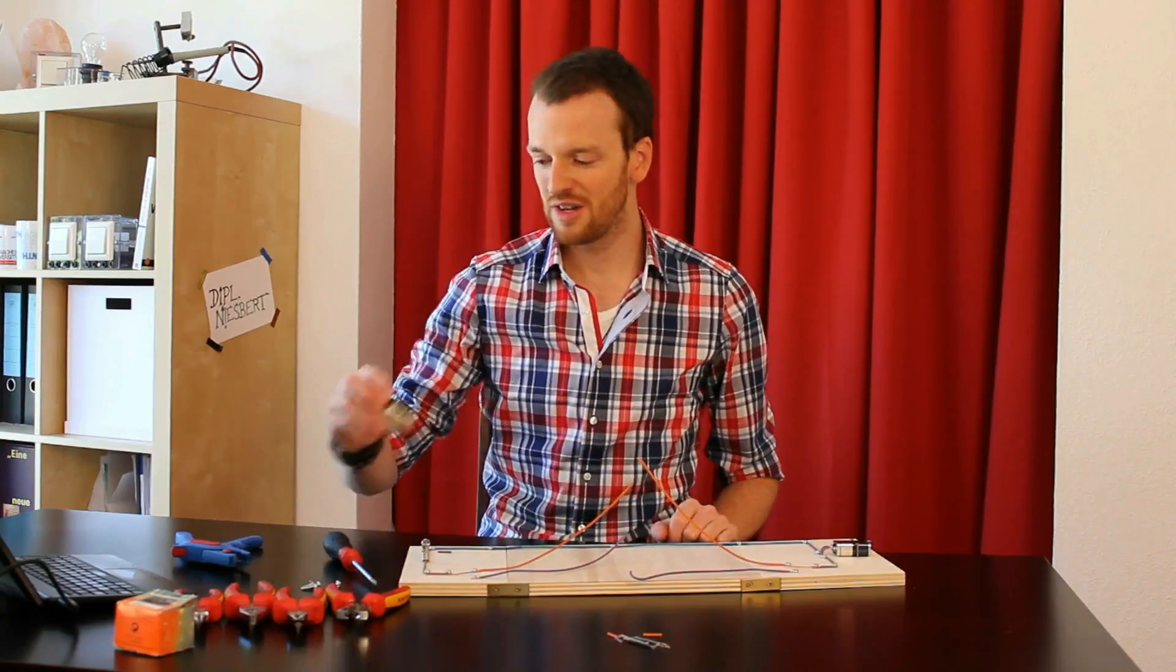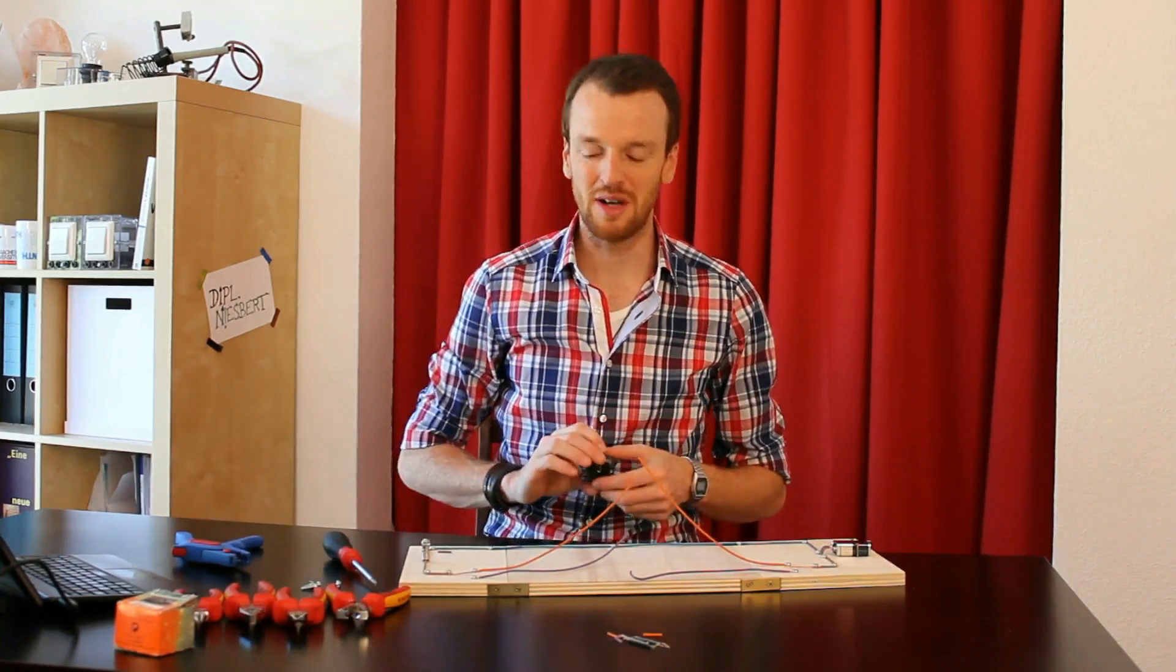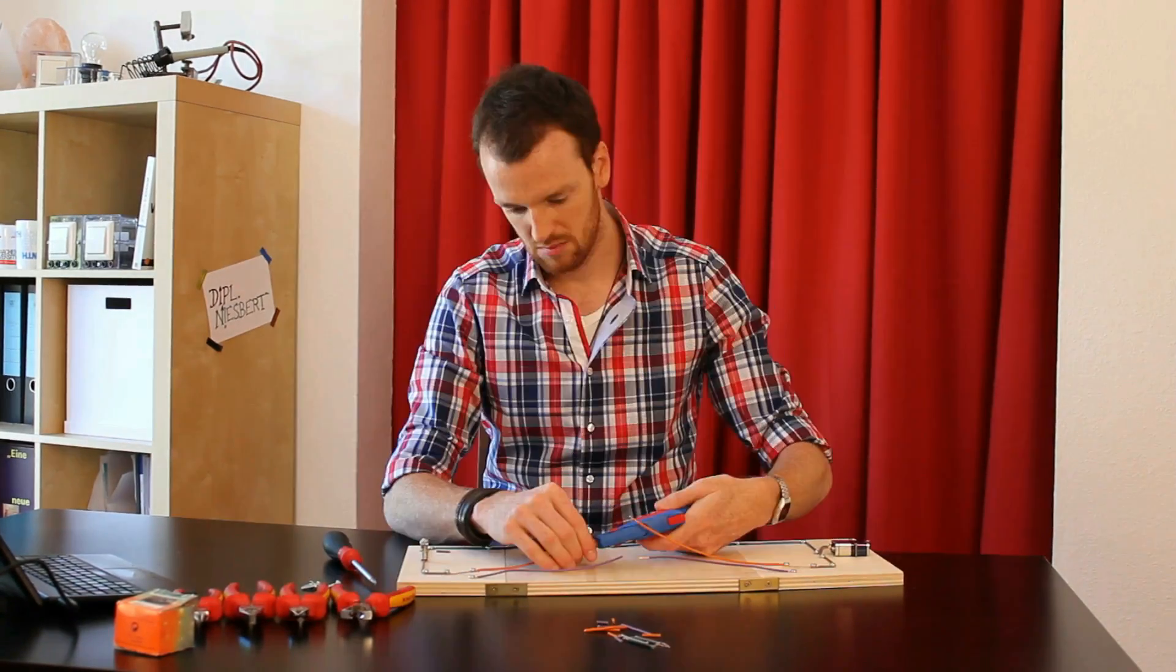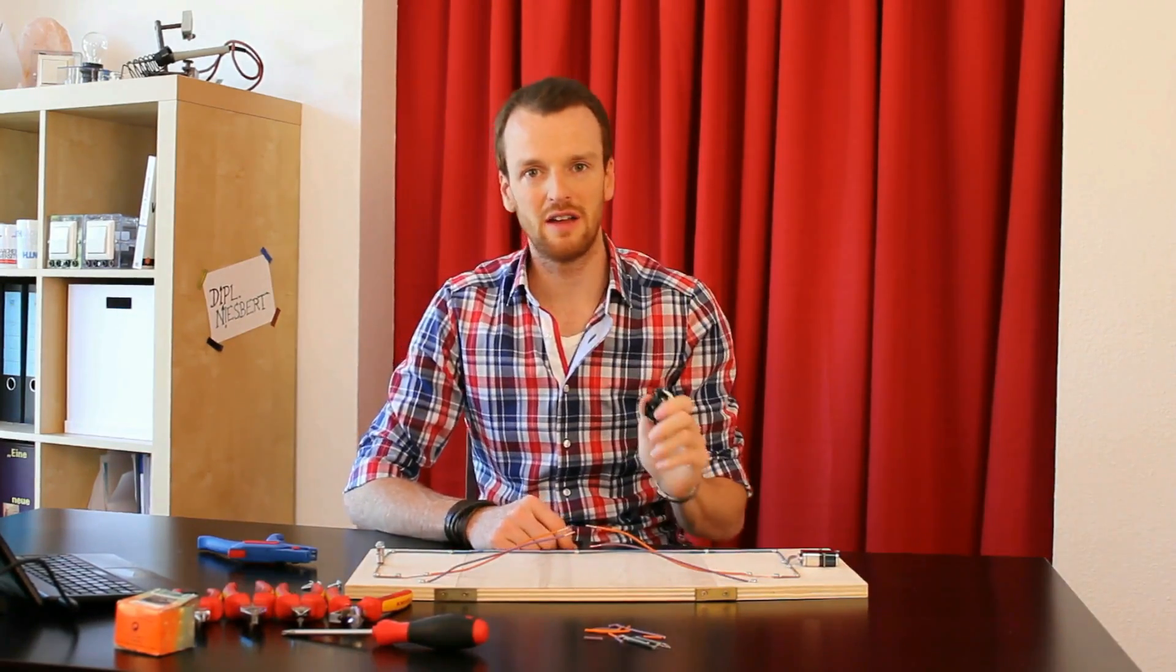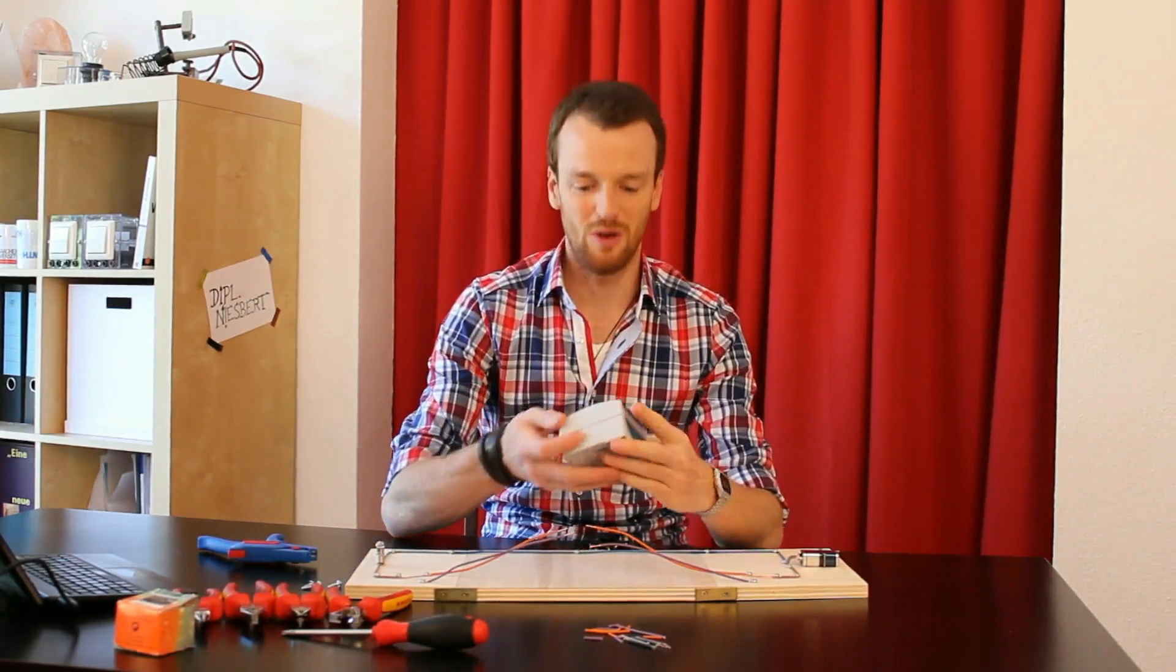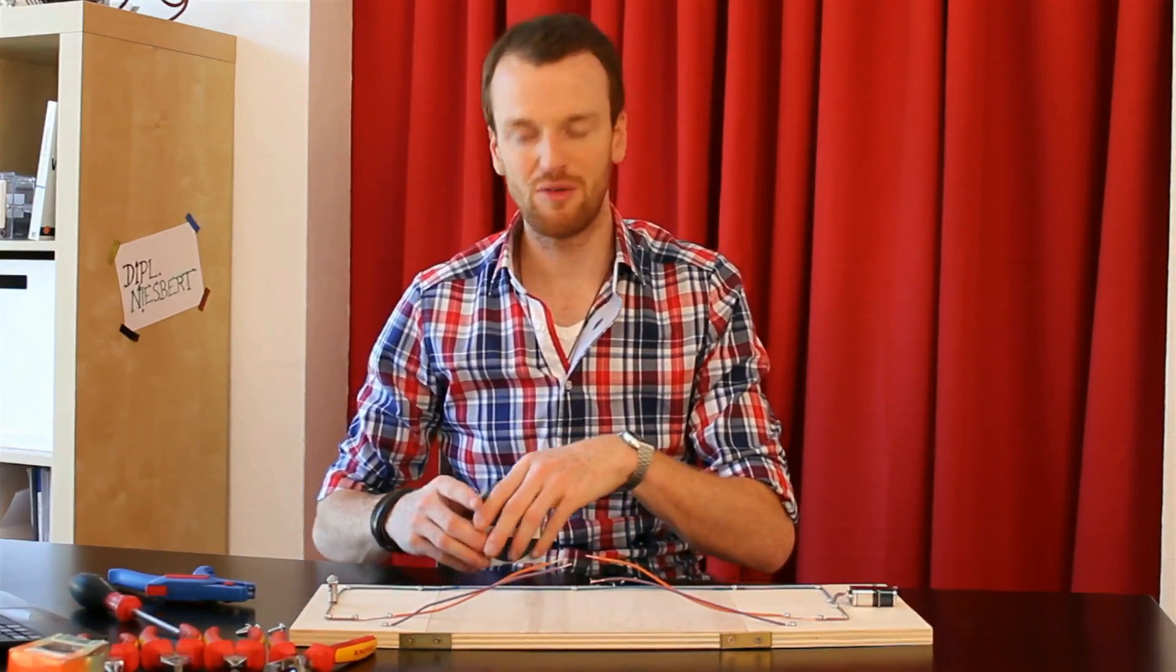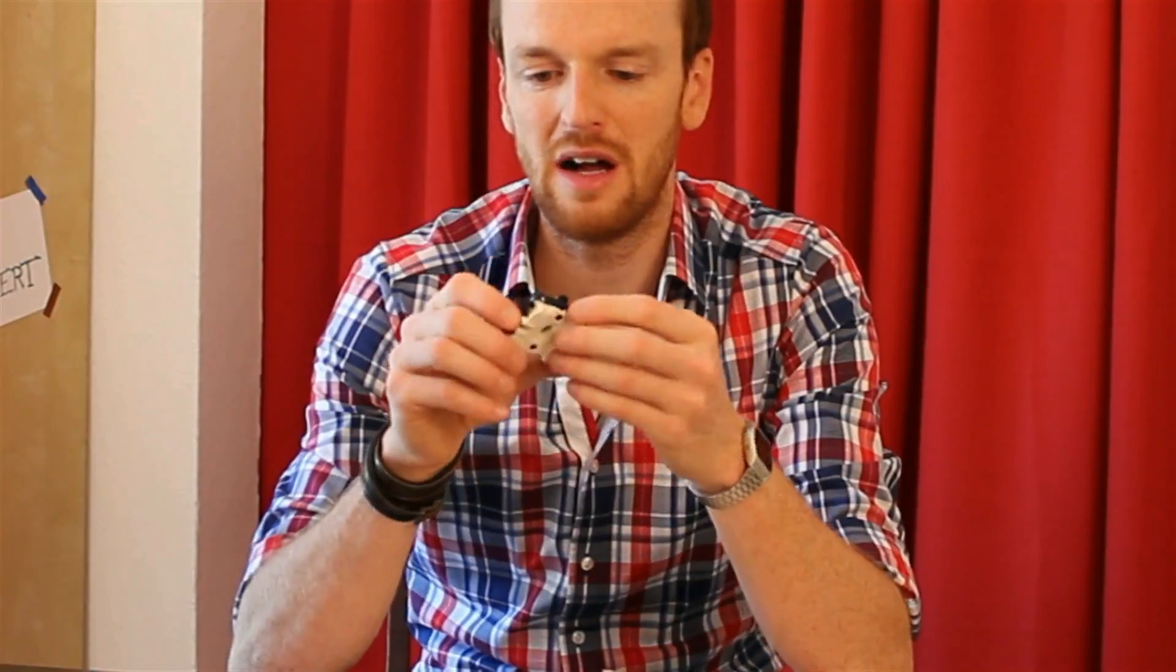Jetzt baue ich da diesen Kreuzschalter ein, den ich mir mal besorgt habe. Das ist übrigens nur das Innenteil, das war in so einem Gebäuse hier. Da habe ich einfach mal aufgeschraubt und dann habe ich gesehen, aha, da sind vier Anschlüsse dran.